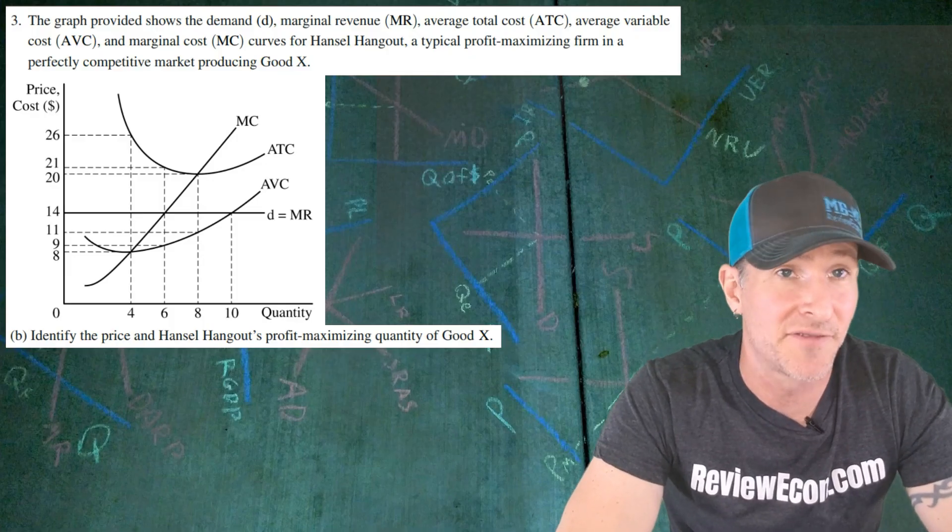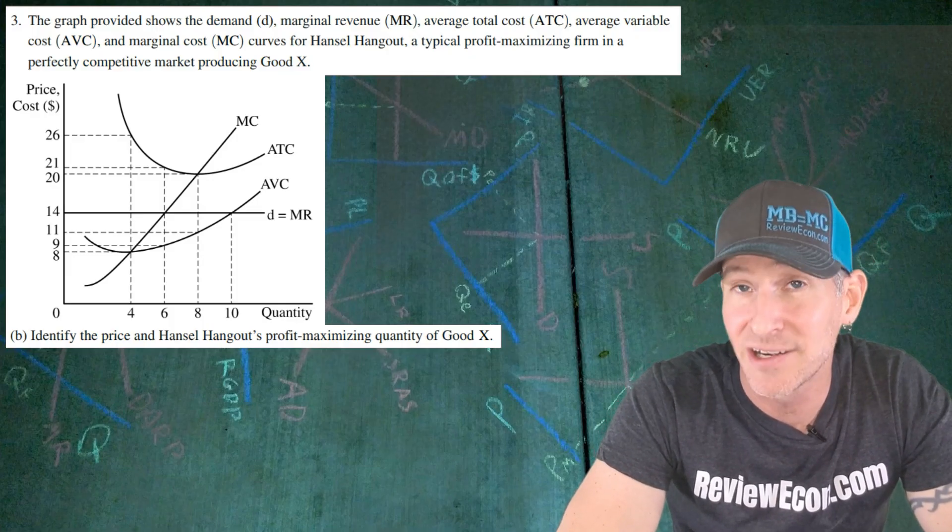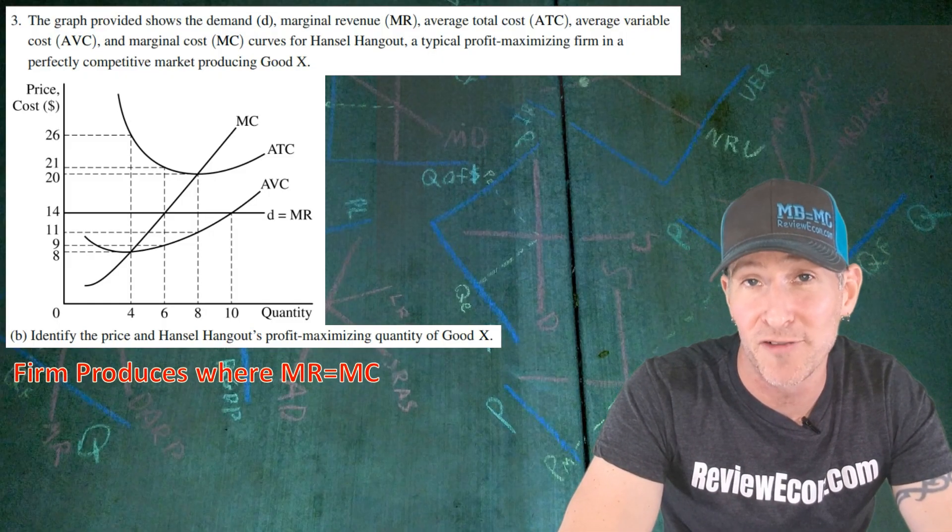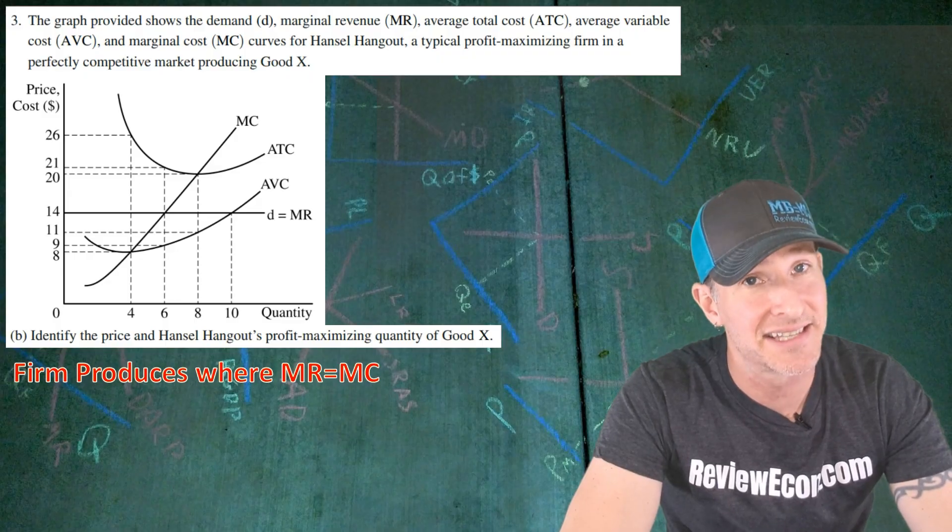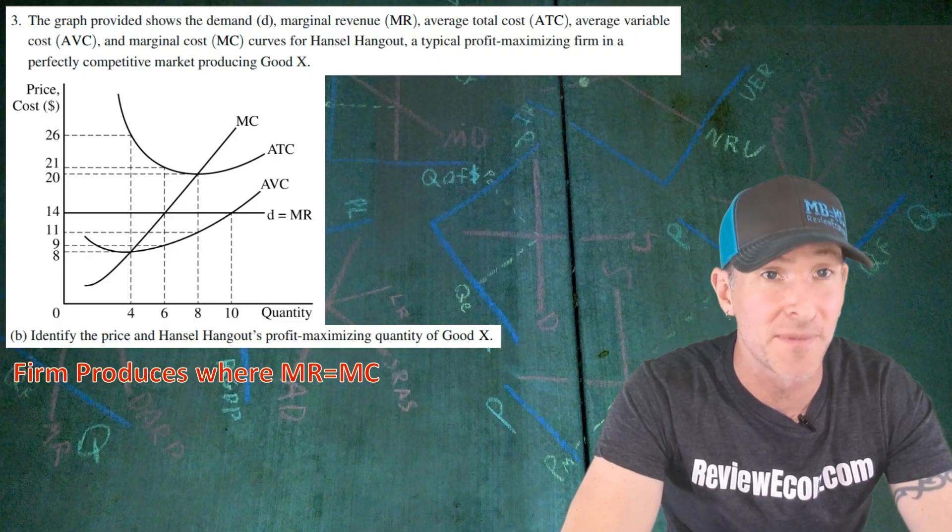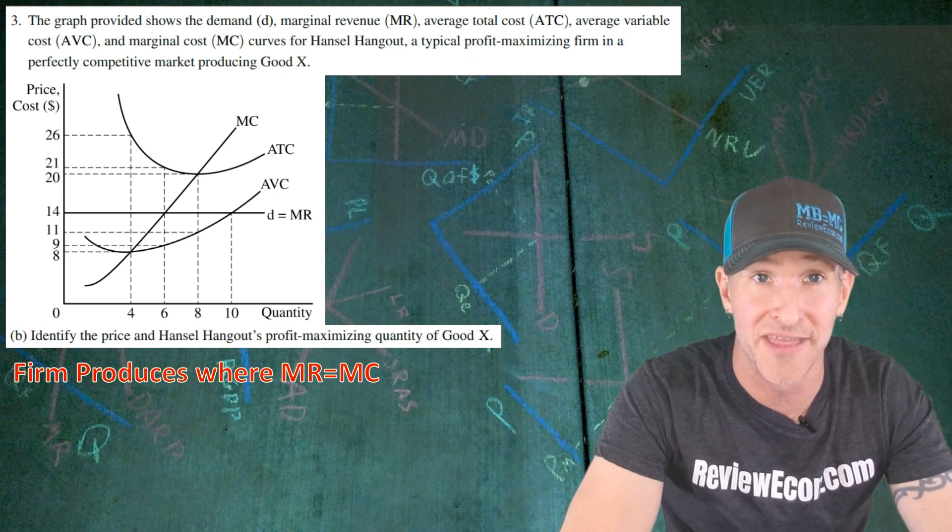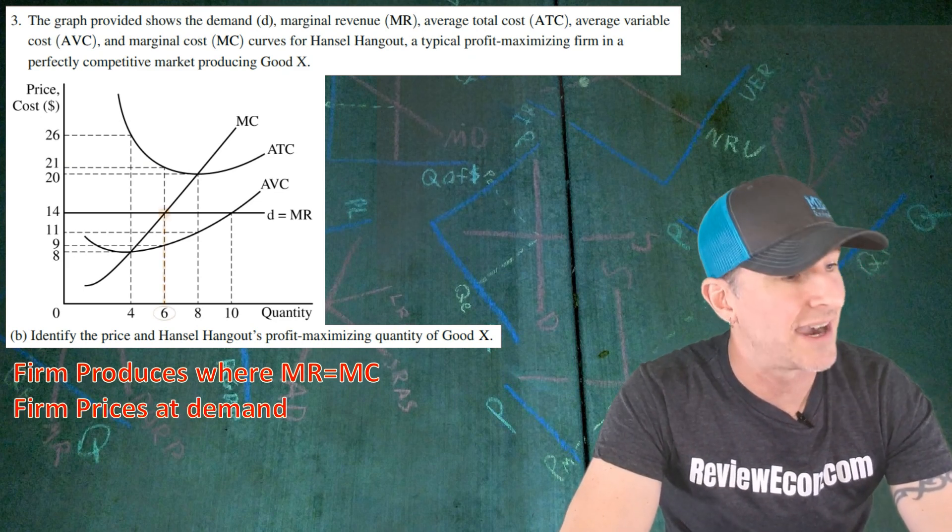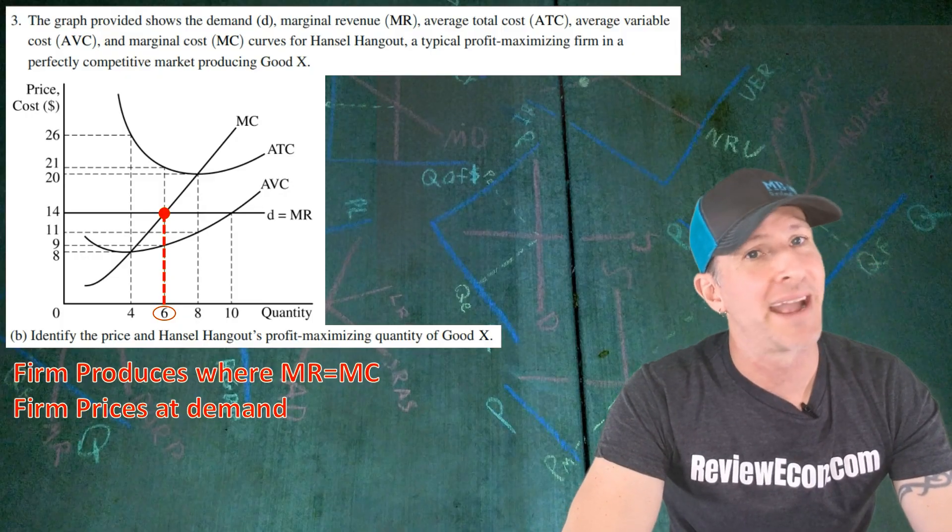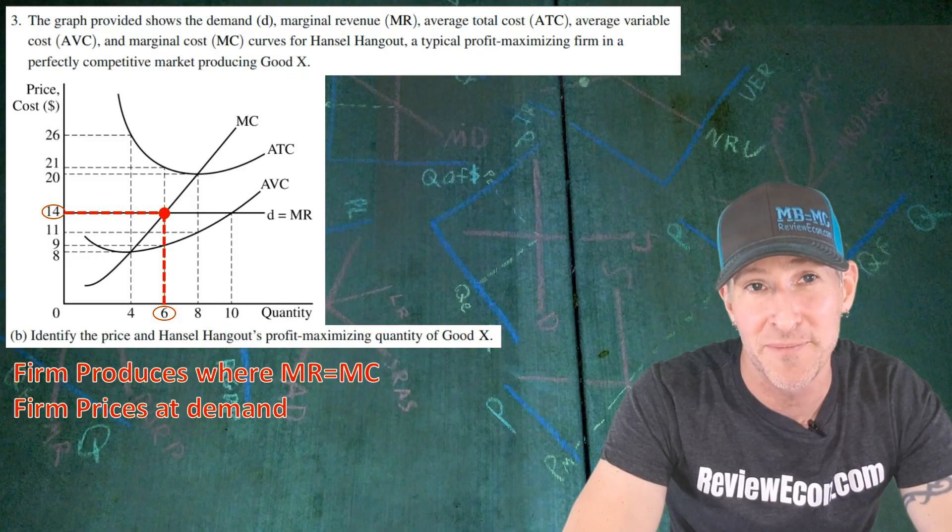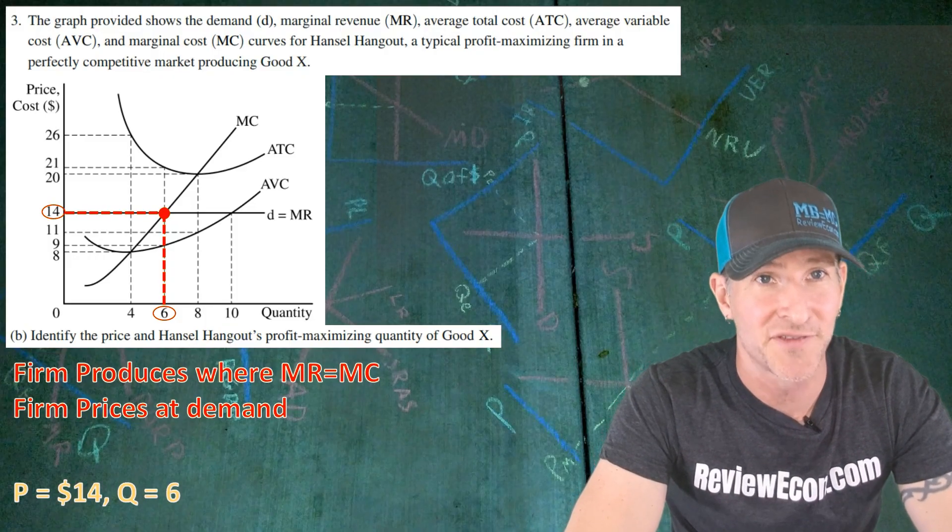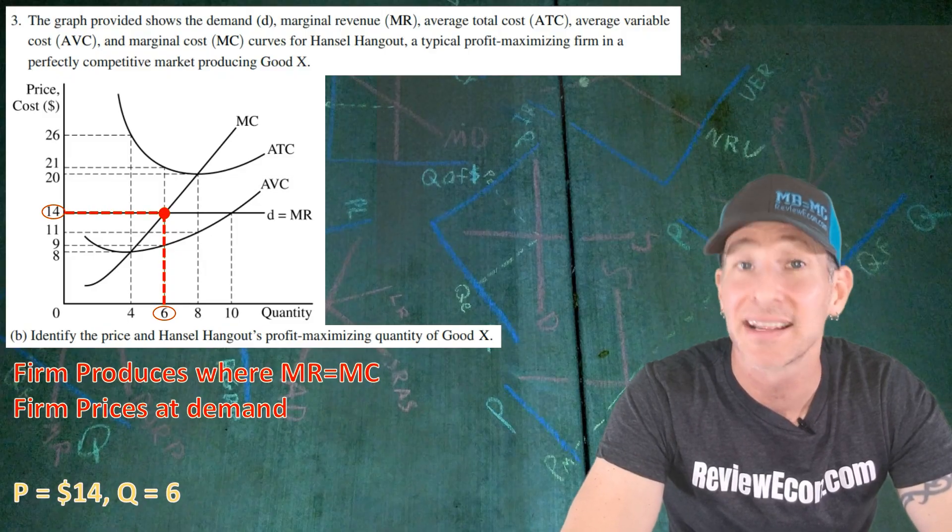For part B, we have to identify the profit-maximizing price and quantity of Hansel Hangout. Remember, all profit-maximizing firms are going to produce where MR equals MC. And since this firm is a price taker, thanks to them being a perfectly competitive firm, that demand curve is going to be horizontal at the market price. So let's find our profit-maximizing quantity, which is six, then follow that demand curve over to that y-axis, and that gives us a profit-maximizing price of $14. Simply state those, the price is $14, the quantity is six, and you get your next point.